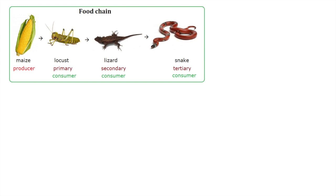When we look at energy in ecosystems, we often look at several organisms rather than just one. When we look at food chains, we can see that there are different roles: organisms can be producers or consumers, and there is a difference between primary, secondary, and tertiary consumers.